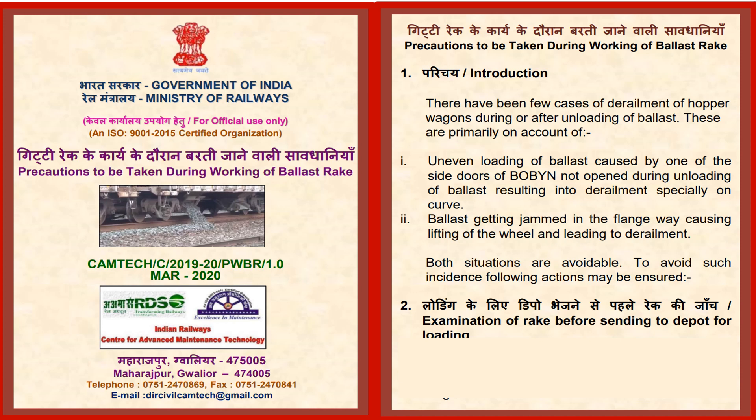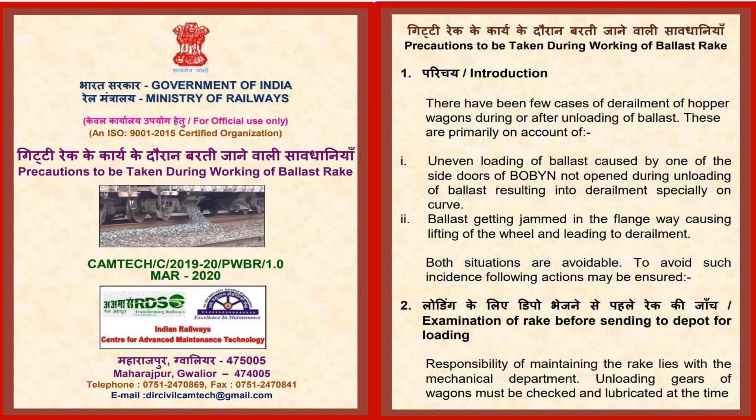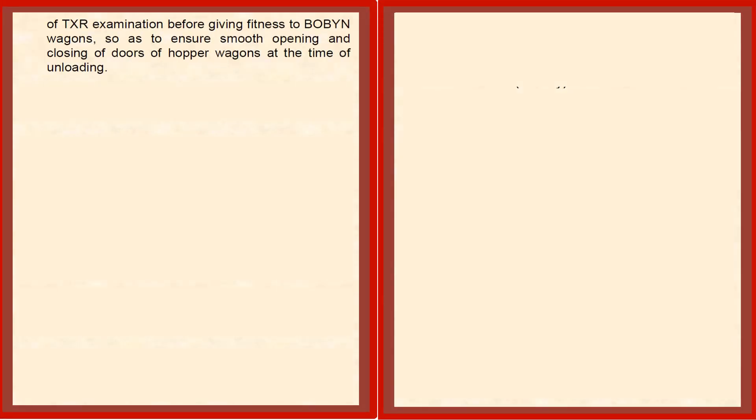To avoid such incidents, following actions must be ensured. First, examination of rake before sending to depot for loading: the responsibility of maintaining the rake lies with the mechanical department — that is clearly stated. The unloading gears of the wagons must be checked and lubricated at the time of TXR examination before giving fitness to the bogie, so as to ensure smooth opening and closing of doors of hoppers at the time of unloading.